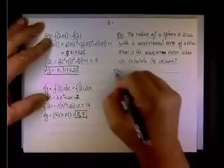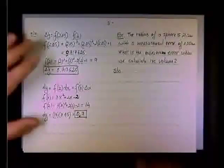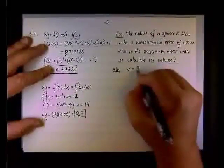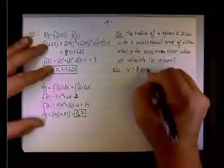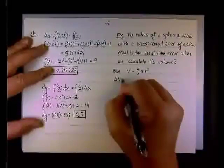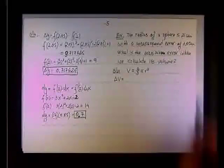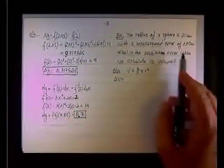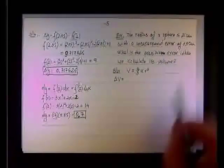So, the volume of a sphere, recall, is 4 over 3 pi r cubed. So, what is delta v, the error? It depends whether the error is upward or downward.